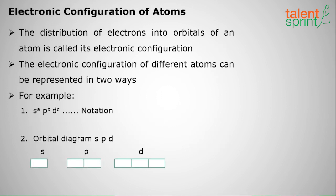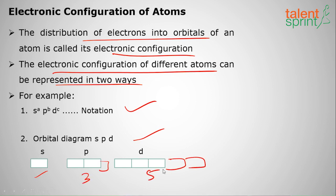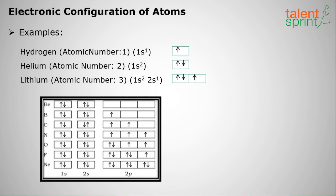The electronic configuration is the distribution of electrons into orbitals of an atom. We can represent it in two ways: using notation or using an orbital diagram. Recall that s has 1 subshell, p has 3, d has 5, and f has 7. For example, hydrogen has atomic number 1, so its configuration is 1s¹. Each s orbital can hold 2 electrons.